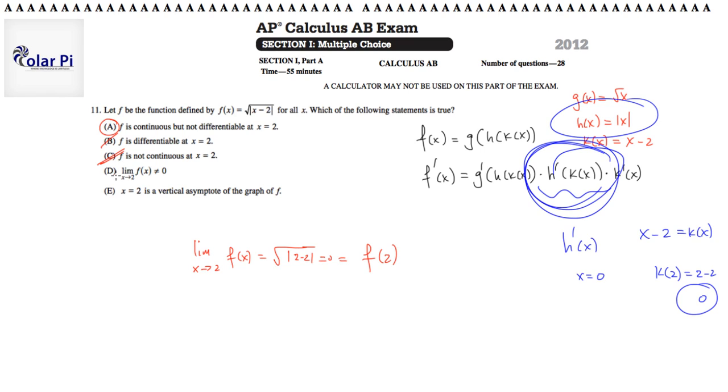Okay. And then, d, the limit as x goes to 2 of f of x is not 0. Well, since f of 2 is equal to 0, and we assumed f to be continuous, it must be that the limit as x goes to 2 of f of x is equal to 0. Therefore, its claiming that it's not equal to 0 must be false.